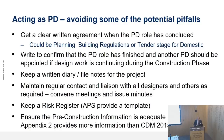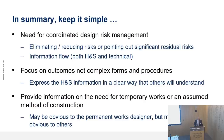We talked about the risk register on the previous slide. For the pre-construction information, I would suggest looking at Appendix 2 of the old CDM 2007 ACOP — it's got quite a decent and far more comprehensive list of what needs to go in there than what's in CDM 2015. As a final summary: with CDM, keep it simple. Focus on eliminating and reducing risks, pointing out significant residual risks, making sure there's an information flow, and focusing on outcomes rather than complex forms or procedures. With Regulation 9, think about it in terms of the three principles rather than the legalese. Provide information if there's a need for temporary works or assumed methods of construction — things may be obvious to yourselves as designers but might not be so obvious to others.